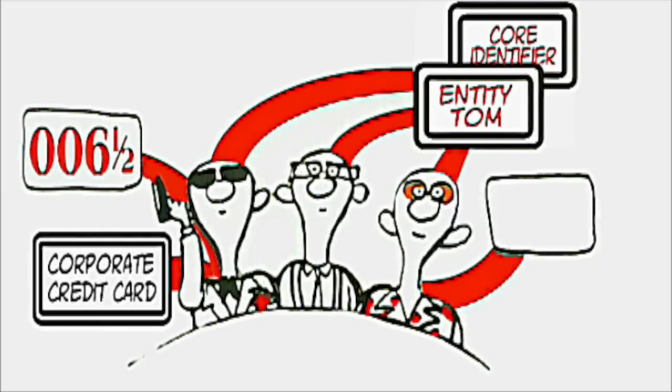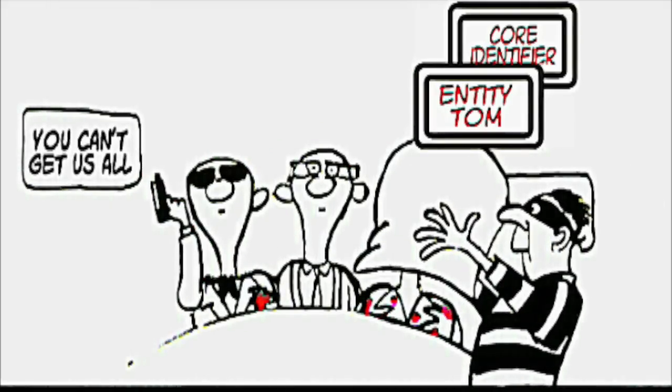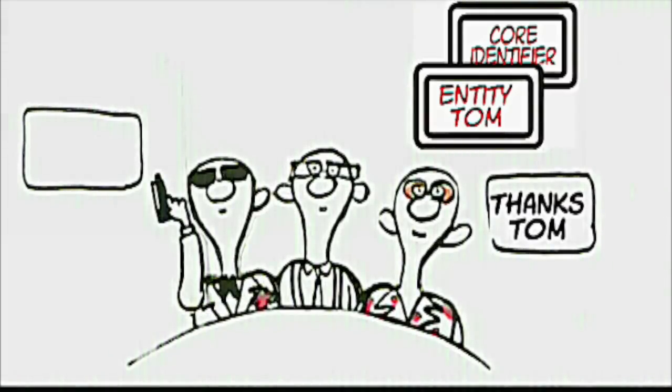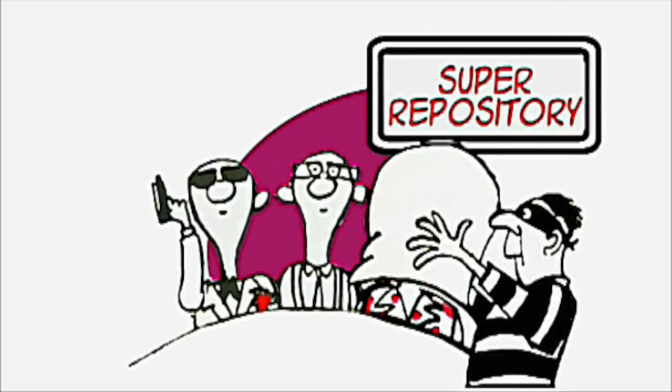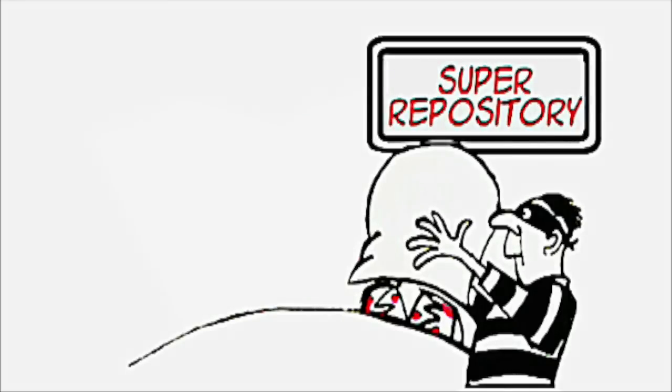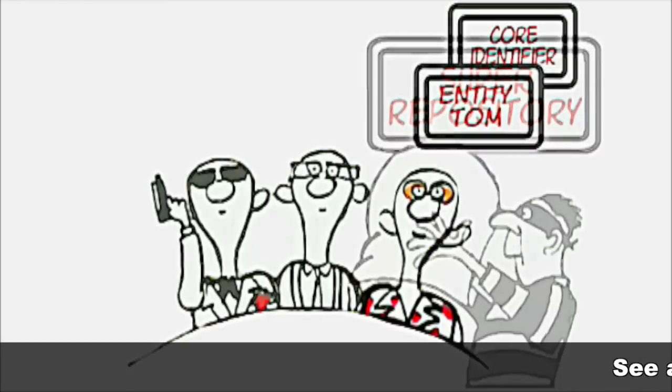Second, Tom can choose to associate attributes to different personas with different levels of trust. Third, distributed personas will minimize the damage and loss of Tom's attributes if they are compromised. This is a fundamental difference to maintaining a super-repository of Tom's attributes, which would totally compromise Tom if it is successfully hacked or accessed by a corrupt government.